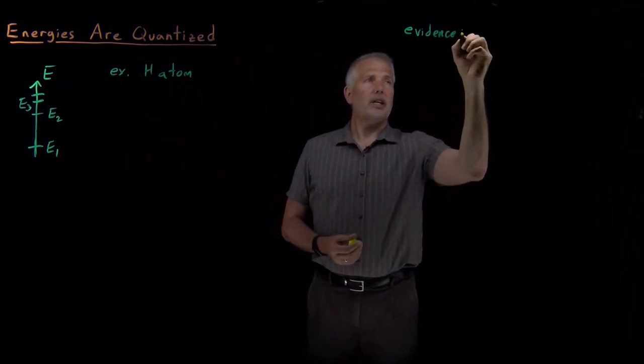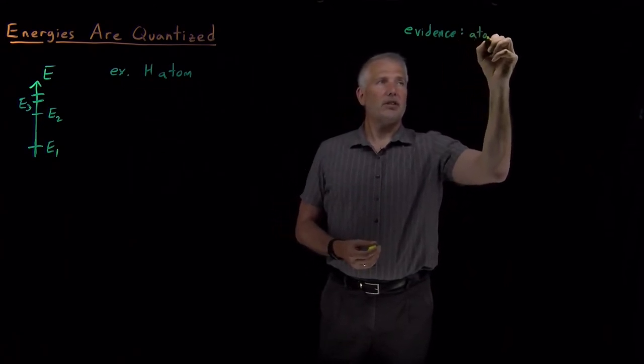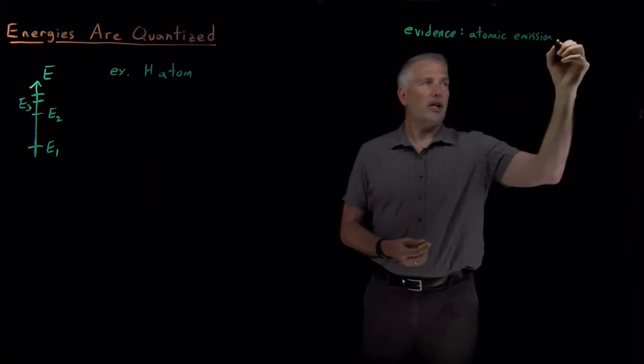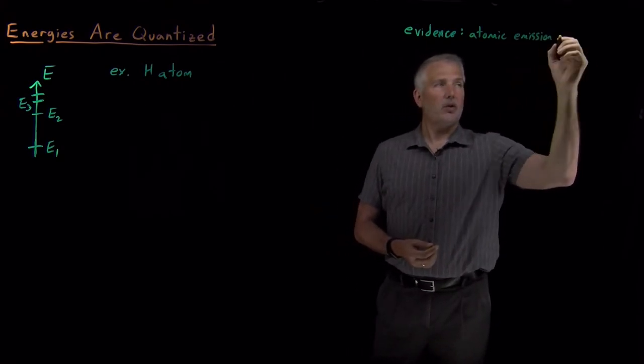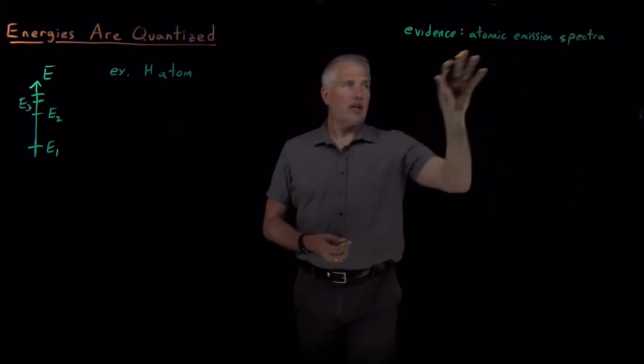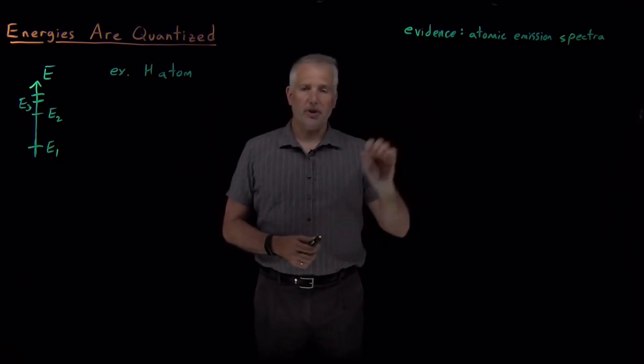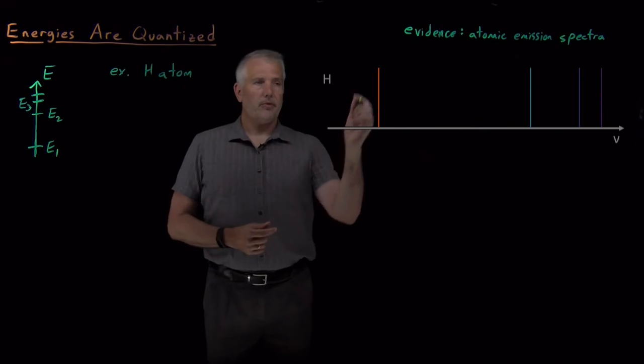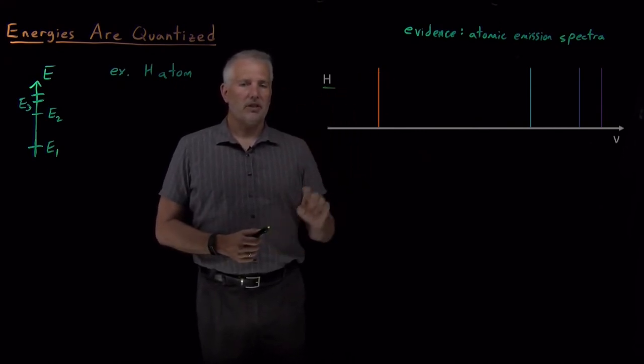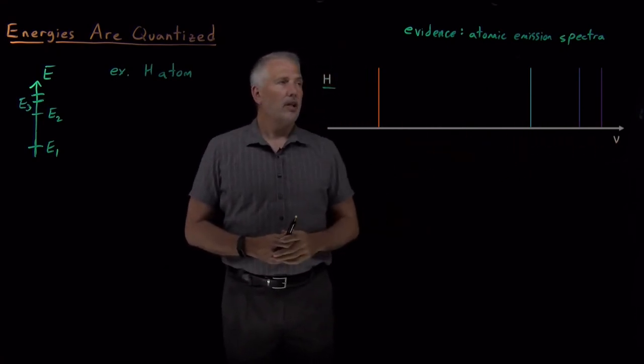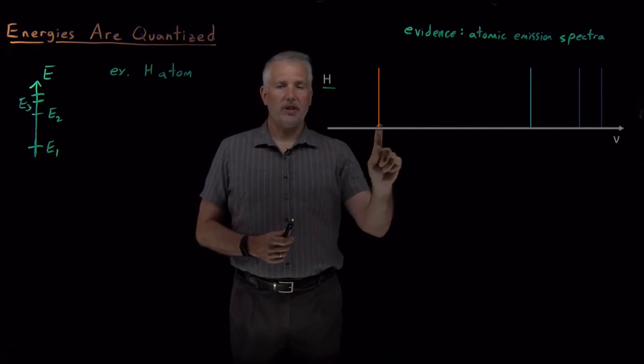The evidence that we have that first told us that energy levels were quantized was understanding how light is either emitted or absorbed by atoms and molecules. Something called an atomic emission spectrum. If I bring up a picture here of the atomic emission spectrum for hydrogen. This diagram for hydrogen tells us the frequencies of light, as a function of the frequency here, the frequency of light given off by hydrogen.